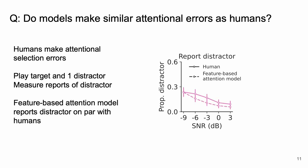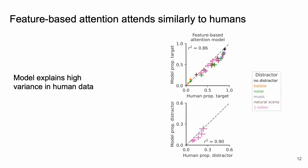When putting the model and humans on the same axis we see both make these distractor reports about on par with each other at an overall low incidence rate. Put together we can see our model of feature-based attention attends similarly to humans and explains much of the variance in human attentional accuracy and errors.